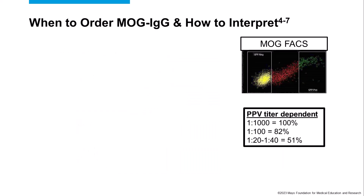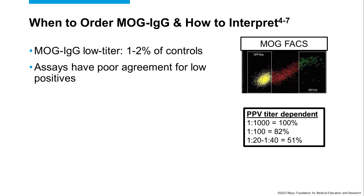When do we order the MOG antibody and how do we interpret it? One of the issues with the MOG antibody that we don't really see with the aquaporin-4 antibody is that at low titer, sometimes we can see some slight binding in disease controls. Up to one to two percent of MS patients, for example, can have MOG antibodies. They looked at a hospitalized group of patients and found that one to two percent could have low positive MOG antibodies. When you test MOG antibodies across multiple laboratories, there's poor agreement for low positivity — in one lab it might be low positive and in another it might be negative. With high positives, they're very reliable across all laboratories.